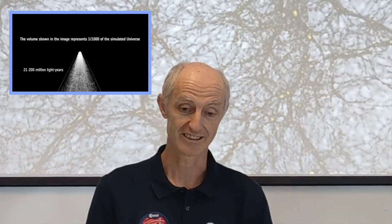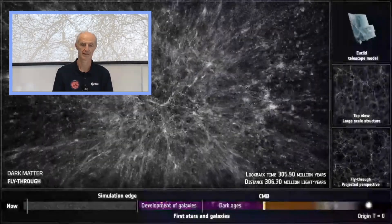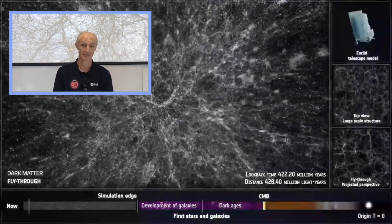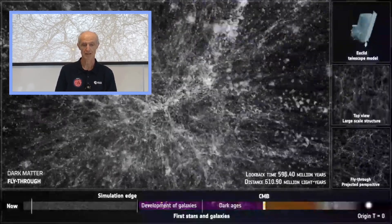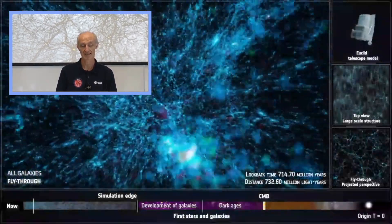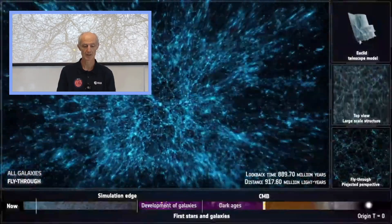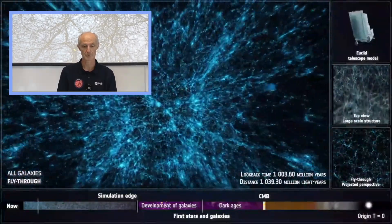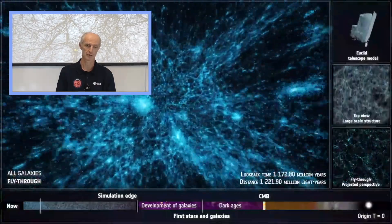The mission requires simulations at the beginning to design and optimize the mission, and now they are very important in order to extract the science and analyze the data. We have built the largest N-body simulation today. It contains 4 trillion particles and it was run at the Swiss supercomputer center. From the dark matter particles, we have detected halos — structures of many particles that correspond to the galaxies and clusters that we observe today.